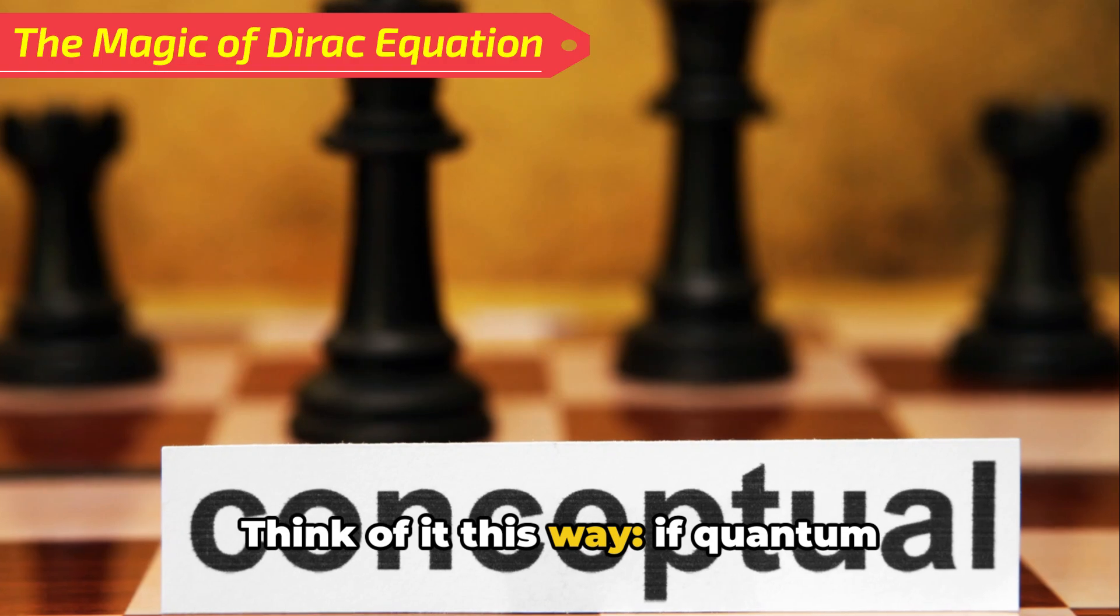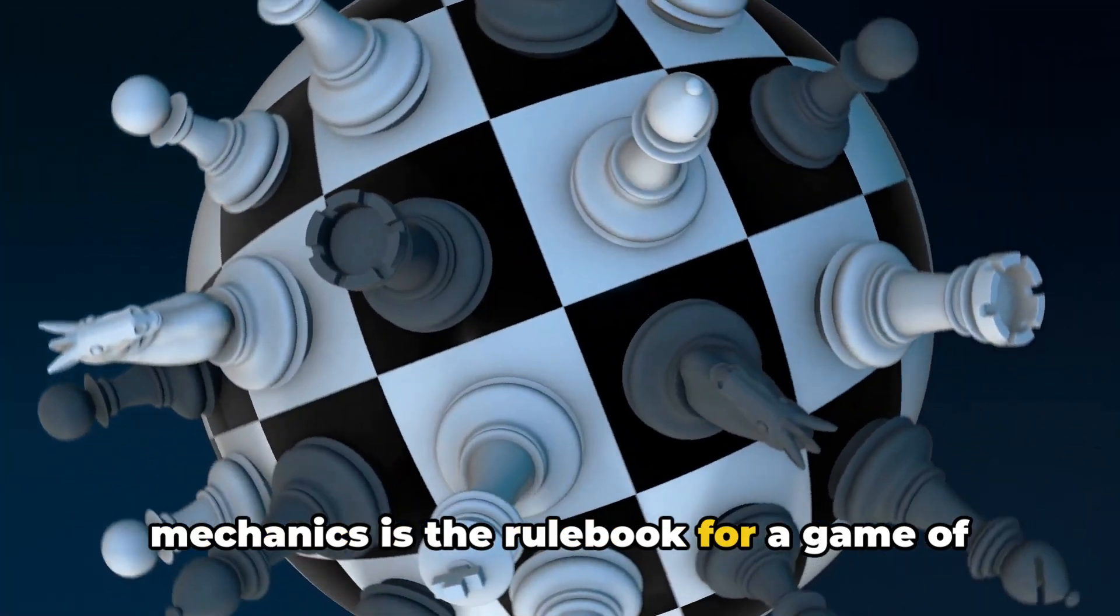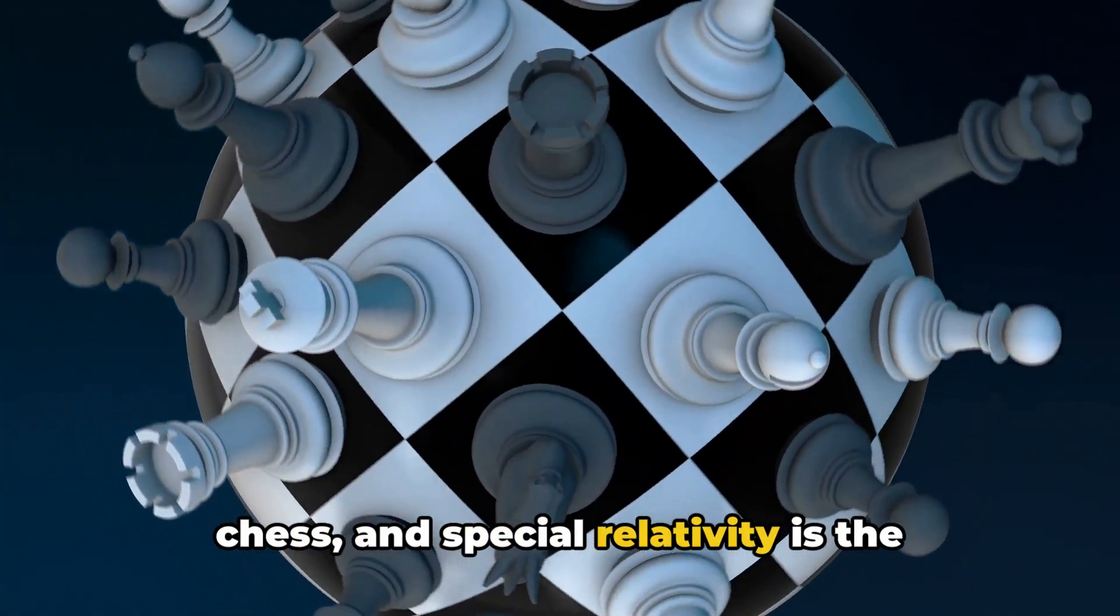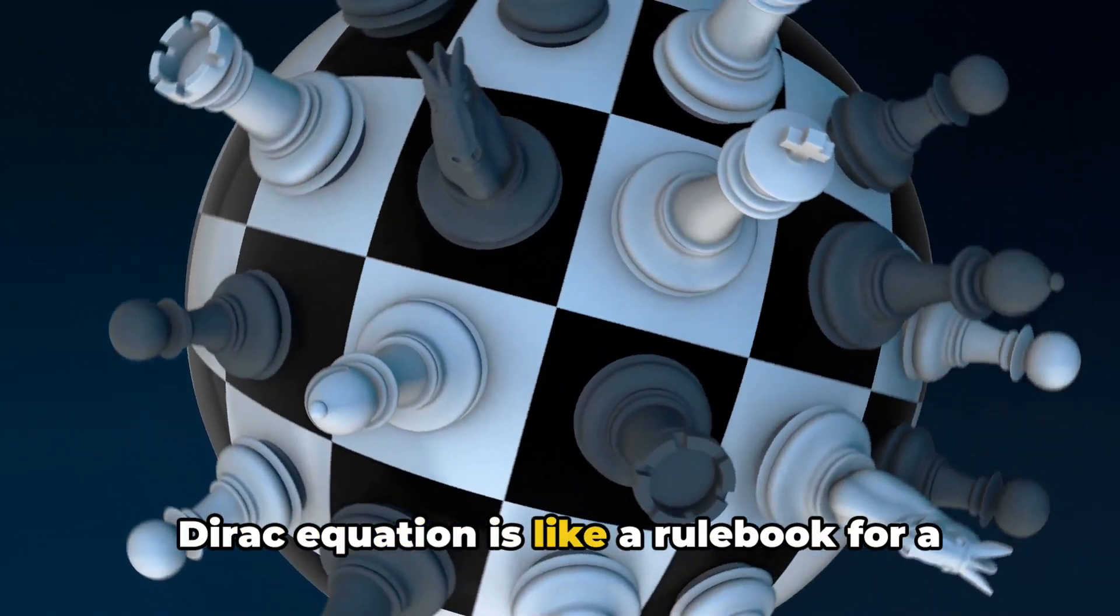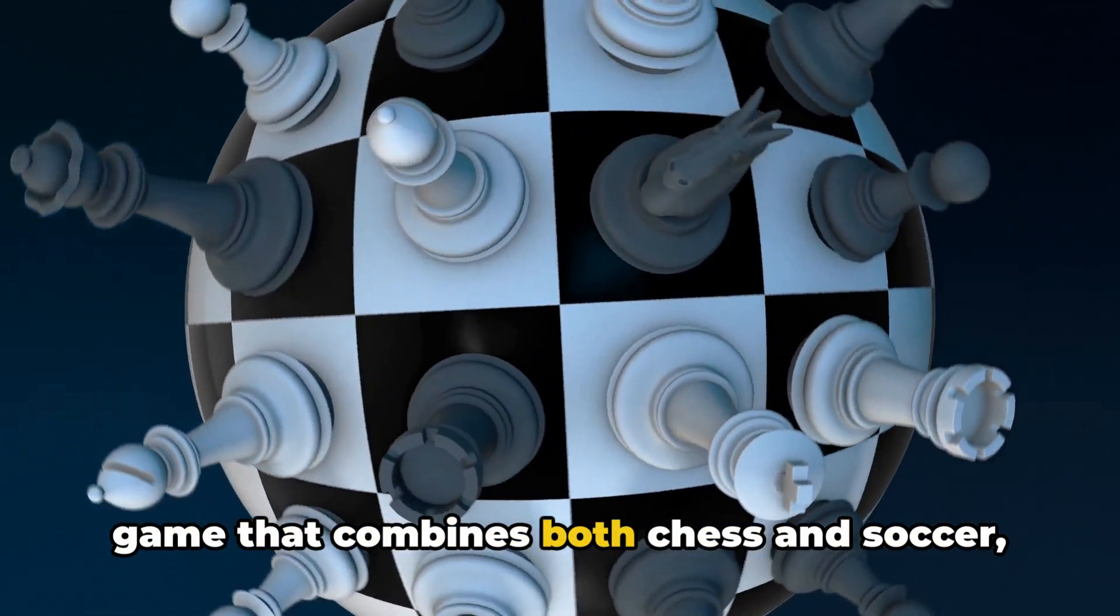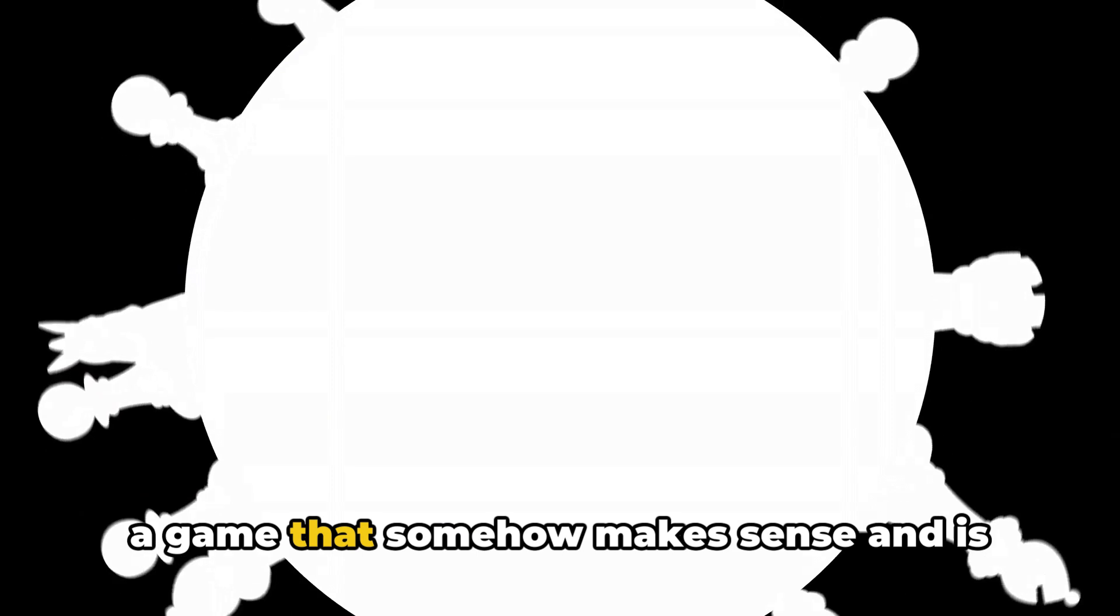Think of it this way. If quantum mechanics is the rulebook for a game of chess, and special relativity is the rulebook for a game of soccer, then the Dirac equation is like a rulebook for a game that combines both chess and soccer, a game that somehow makes sense and is even more captivating.